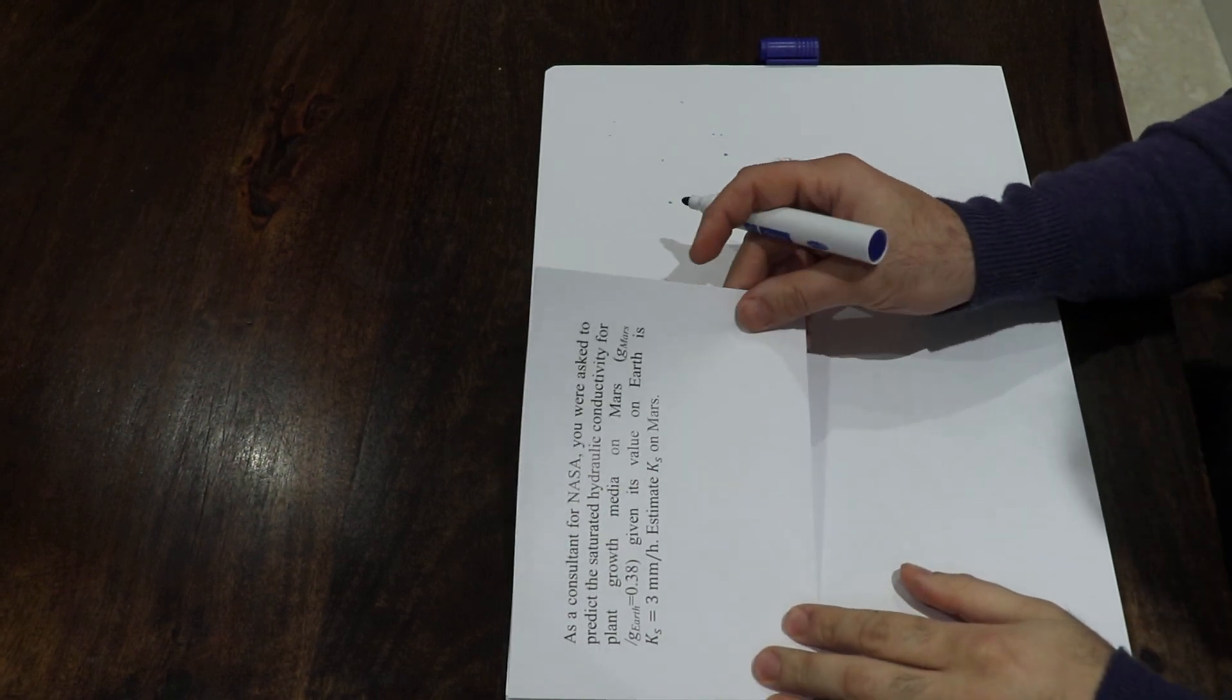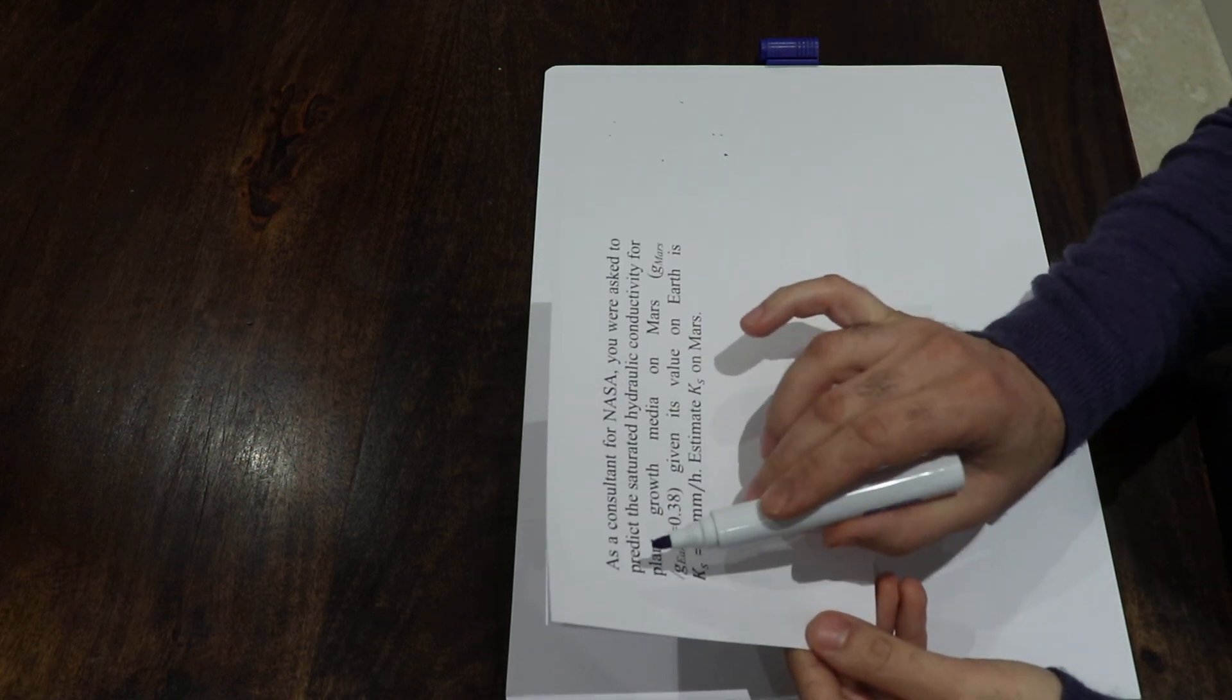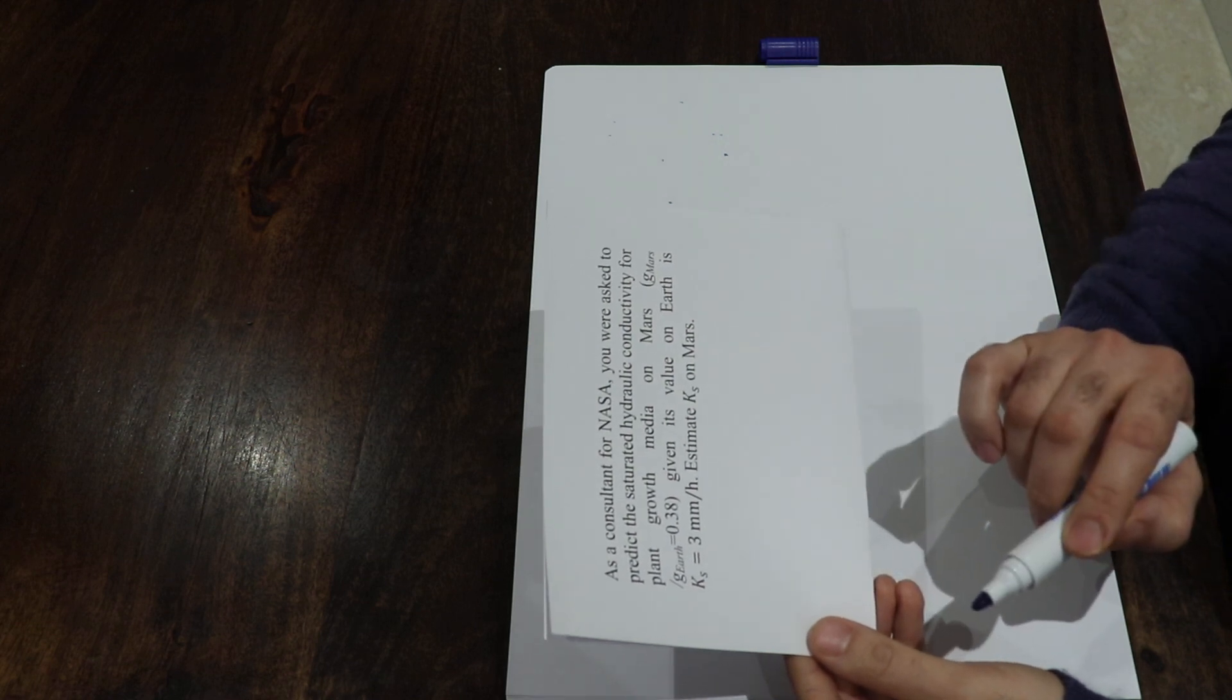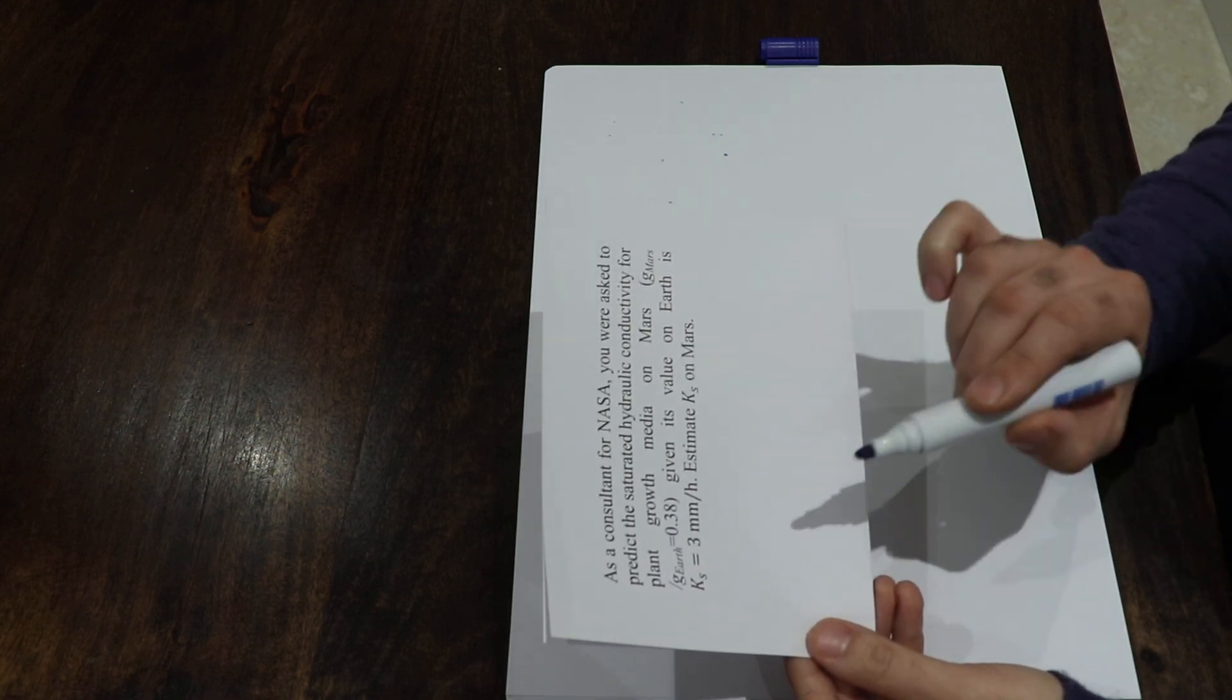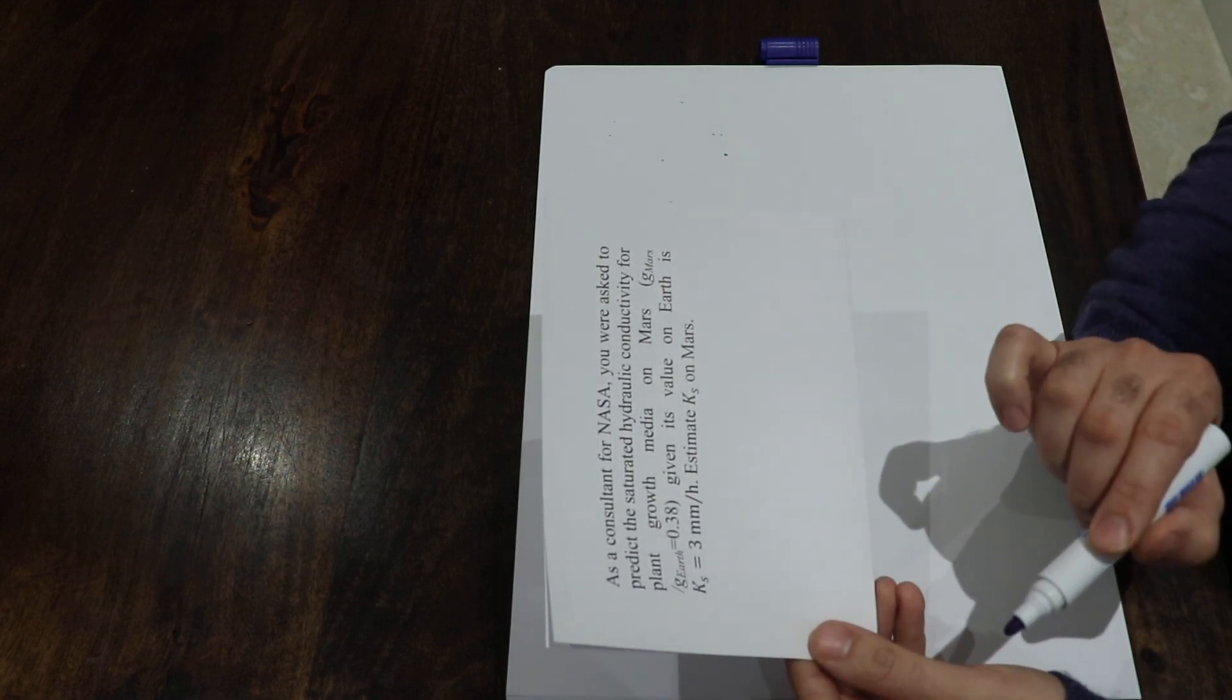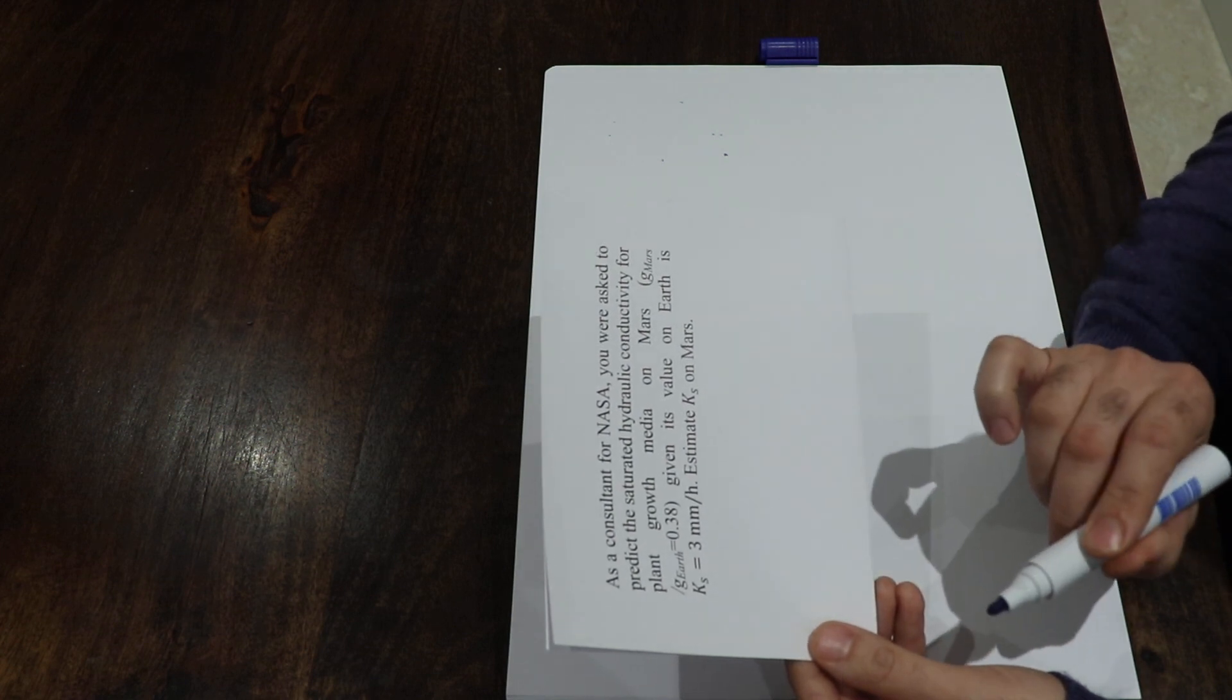Hello, this question is about saturated hydraulic conductivity. As a consultant to NASA, you were asked to predict the saturated hydraulic conductivity for plant growth media on Mars, where G Mars over G Earth is equal to 0.38. Given its value on Earth is Ks equals 3 millimeters per hour, estimate Ks on Mars.